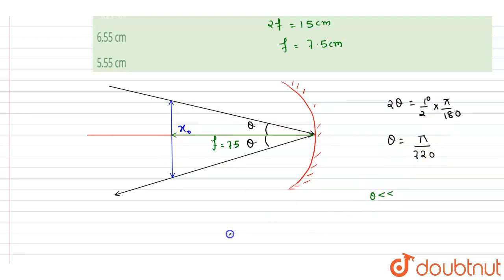And I will write down this arc length equals radius times angle, that is 2 theta. Radius will be the focal length only, focal length into 2 theta. 2f equals the radius of curvature, so this is 15 into theta.